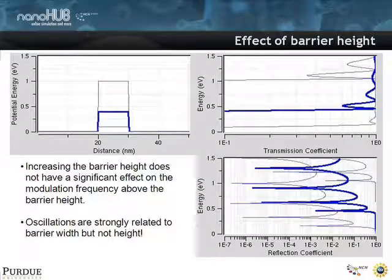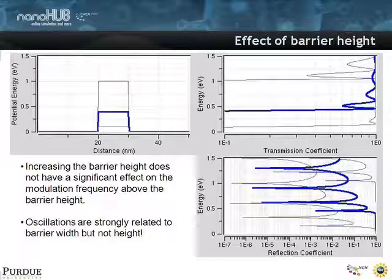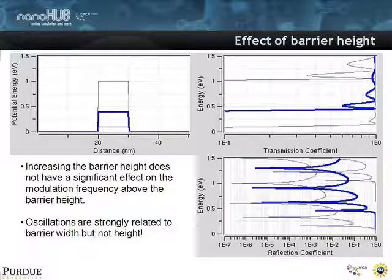Let's look at what happens when you leave the barrier width the same but just make it taller. If you make it taller, you can almost see that the transmission coefficient for a short barrier looks roughly the same as the transmission coefficient of the higher barrier — and yet higher barrier. The modulation for the higher barrier is a little bit deeper, but roughly the frequency is the same.